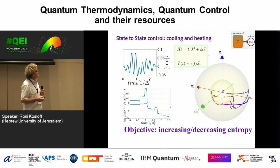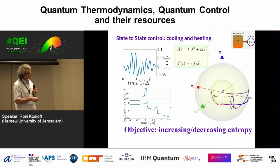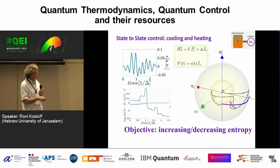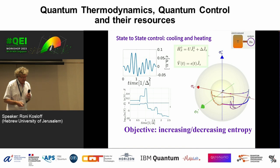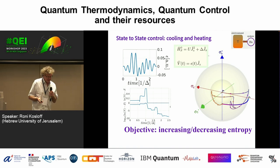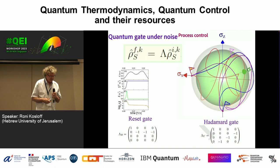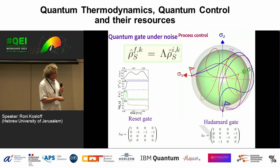For reset: starting inside the Bloch sphere, I want to reach the surface (cooling) or the origin (erasing everything). For a Hadamard gate, we did a full gate control. Here is a reset gate and here is a Hadamard gate. If we start at x, we should reach minus z in this solution.